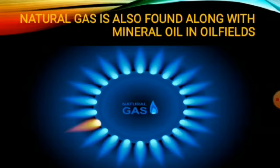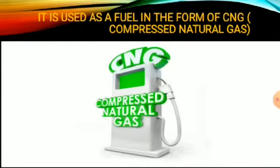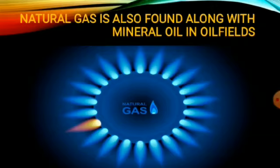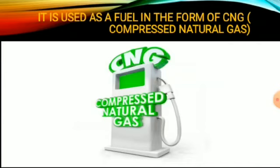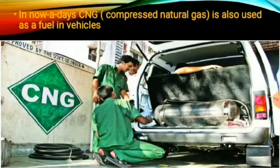Natural gas is also found along with mineral oil extracted from oil fields and oil wells. It is used as a fuel in the form of CNG — Compressed Natural Gas. Compressed natural gas is also used as a fuel in vehicles.